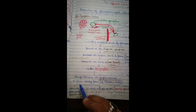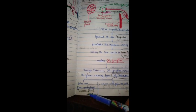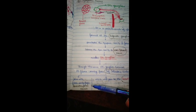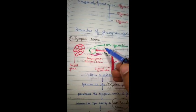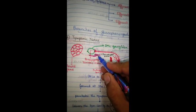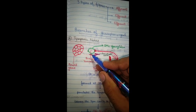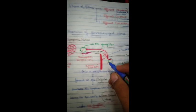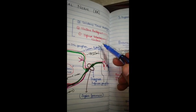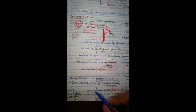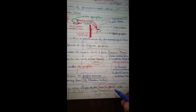The otic ganglion receives parasympathetic fibers coming from the inferior salivatory nucleus. These parasympathetic fibers will join with fibers coming from the auriculotemporal nerve, which is a branch of the trigeminal nerve. Together they then travel to the parotid gland. That is the complete pathway of the tympanic nerve.